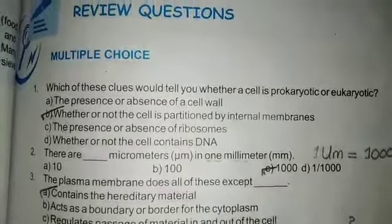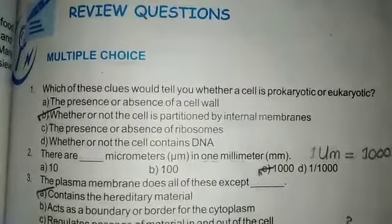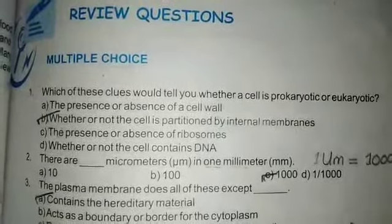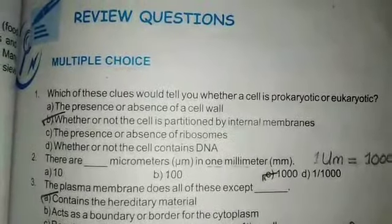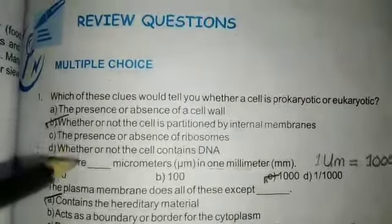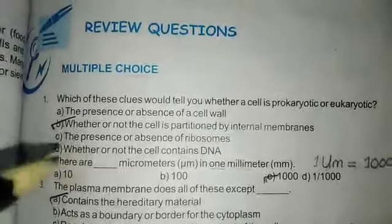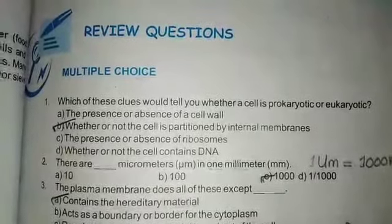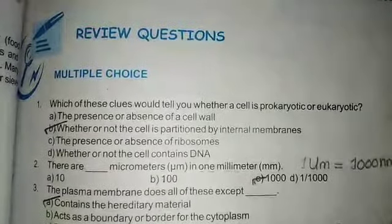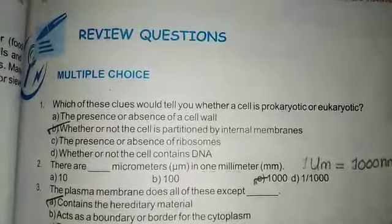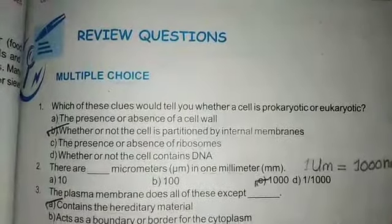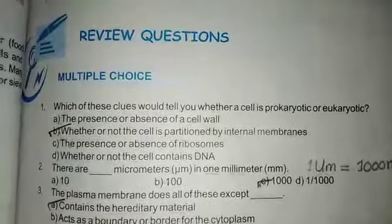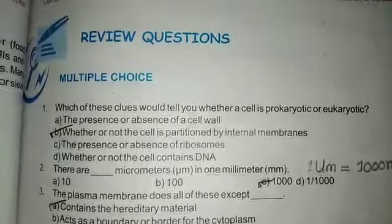Question number one asks students to identify differences between prokaryotic and eukaryotic cells. There are four options, and we have to identify what is not present and what is the difference between them.